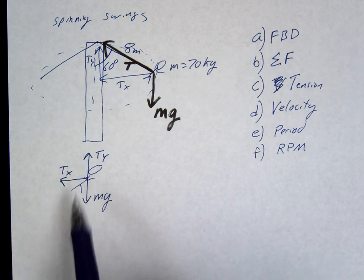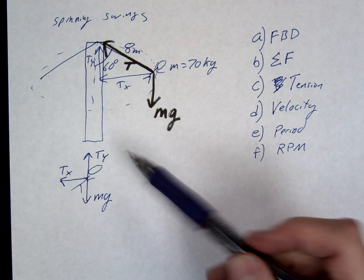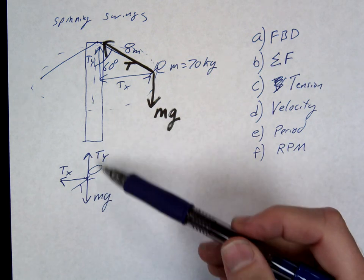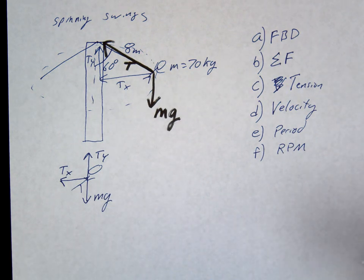The horizontal tension, yeah. So the horizontal tension provides the centripetal force. What is Ty doing? Holding us up. So Ty is holding us up, and then the Tx is pulling us in the circle.